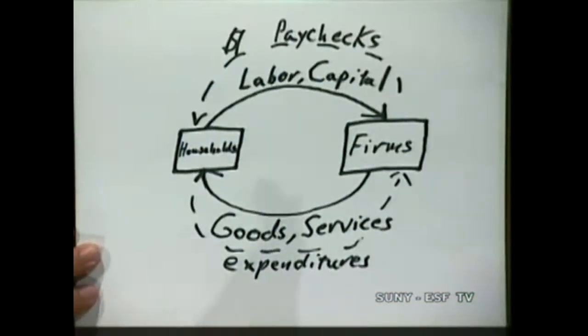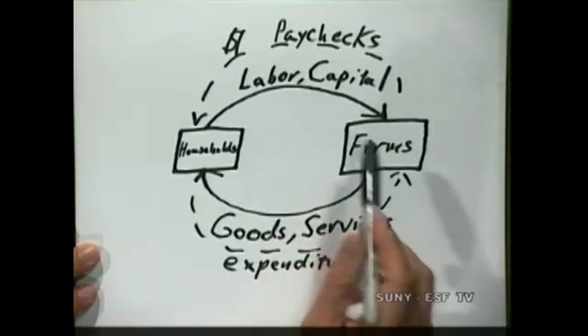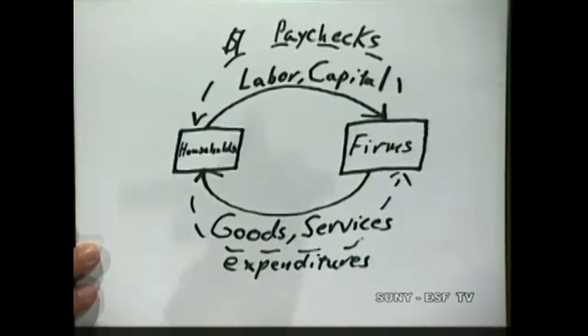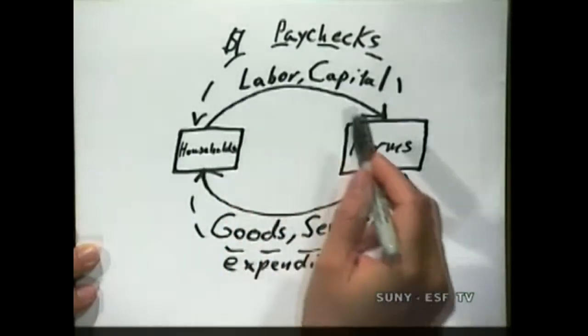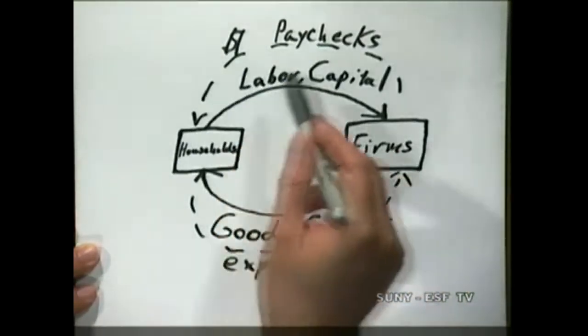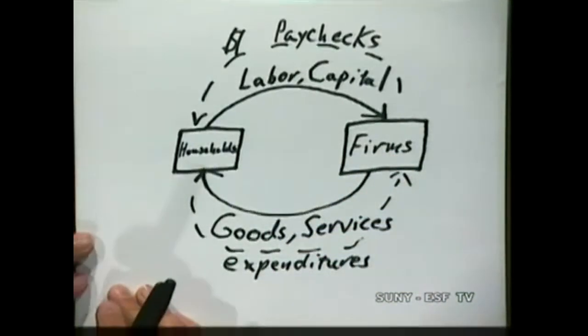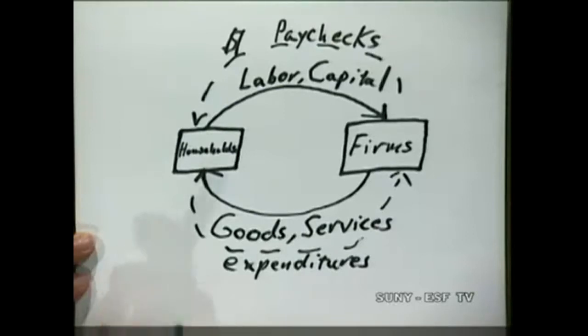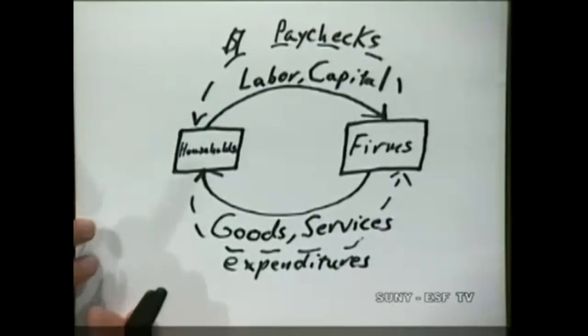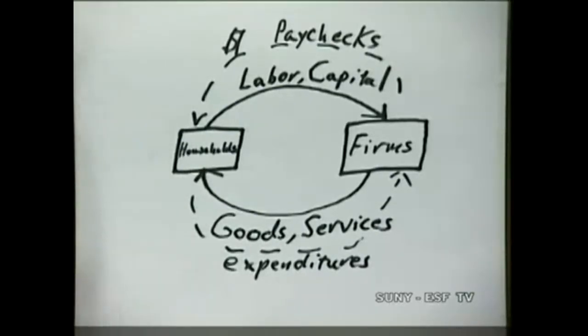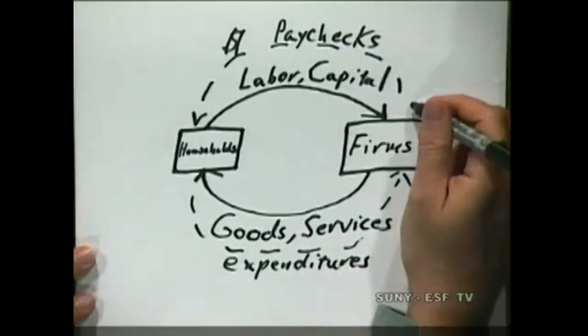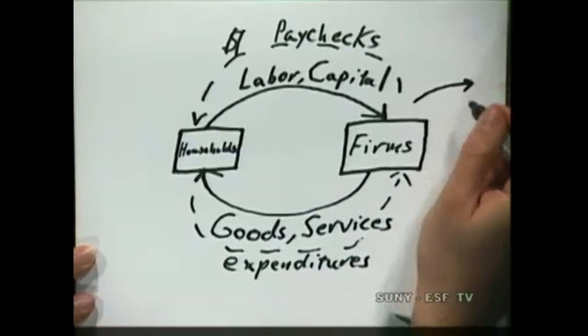We're going to add some things in. If we look back at our original neoclassical model, we can see we've got households and firms interacting. But again, this is a perpetual motion machine — things go around and around, and we know that can't happen. So what we have to do is try to get it to obey the second law of thermodynamics. To do that, we have to add in waste heat.